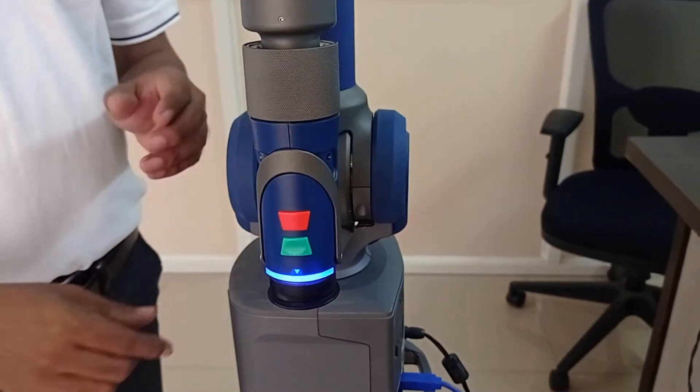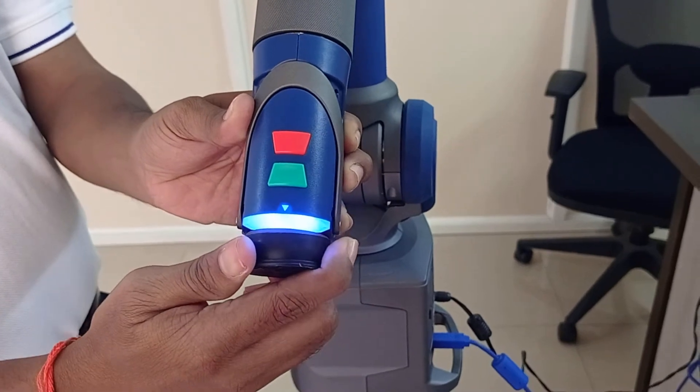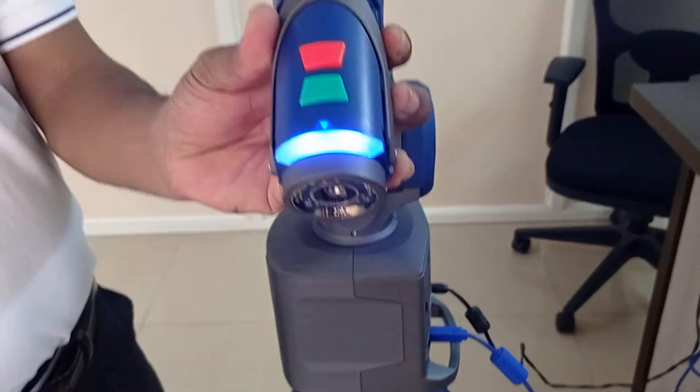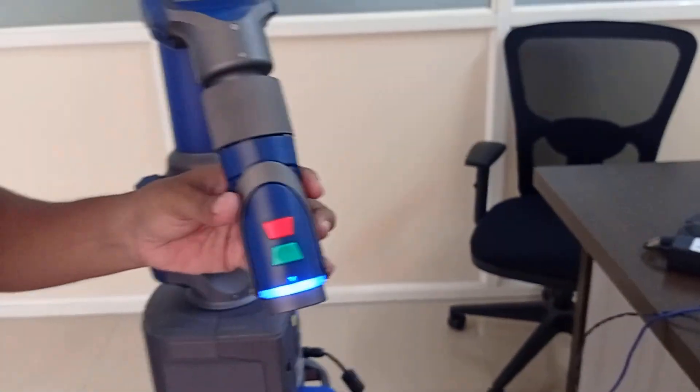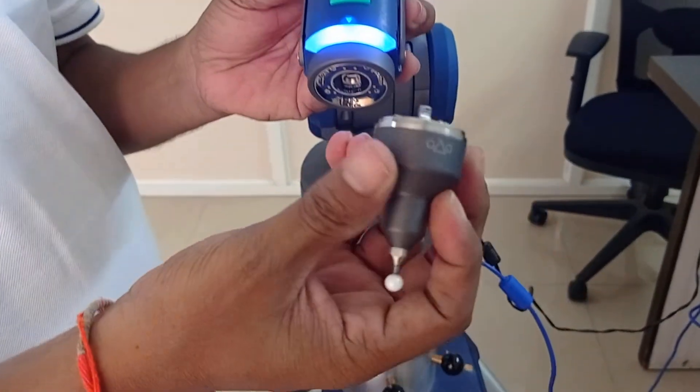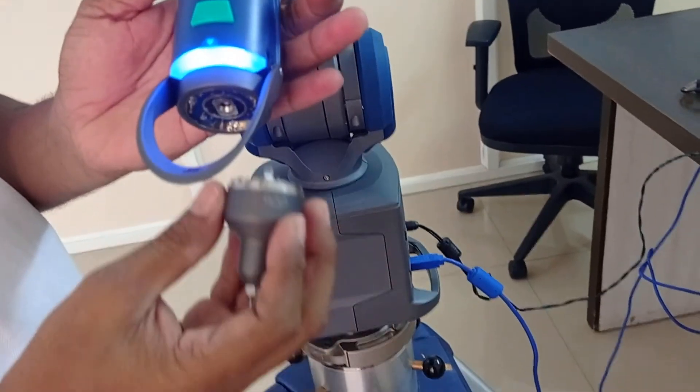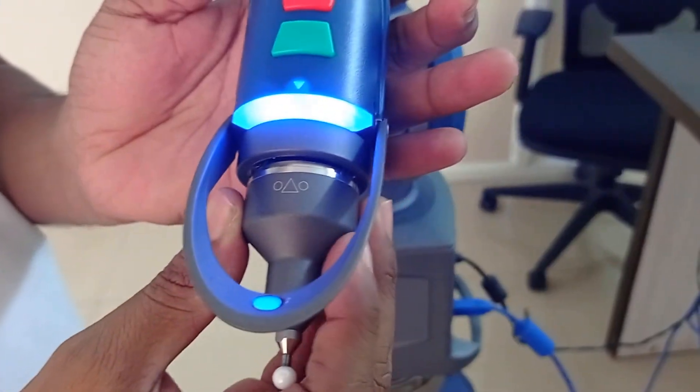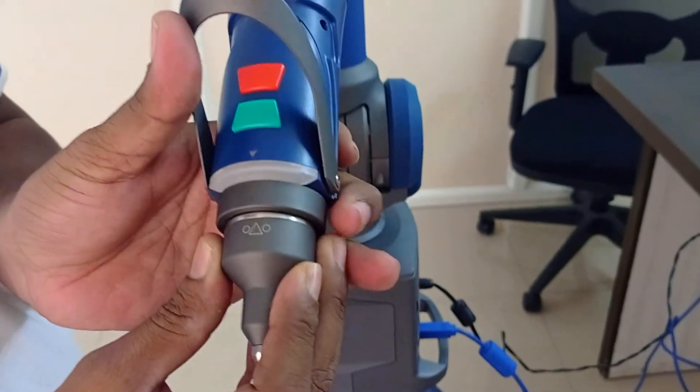Let us see how to fit the probe. Remove the cap. Take the required probe. I am going to use 6mm probe. Lower the probe locking lever. Align the arrow on the probe with the arrow on the arm. After inserting pull up the lever. Check if it has fitted well.